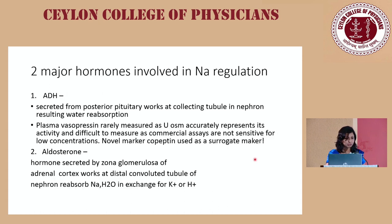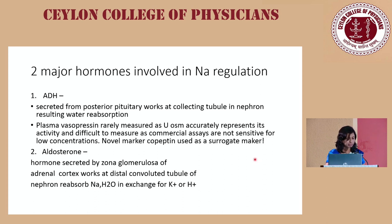Going back to physiology: two major hormones are involved in sodium regulation. Vasopressin, secreted from the posterior pituitary, acts at the collecting tubules of the nephron, resulting in water reabsorption. Vasopressin levels are difficult to measure clinically; urine osmolality accurately represents vasopressin activity. A novel marker called copeptin can be used as a surrogate. Aldosterone, secreted by the zona glomerulosa, acts at the distal convoluted tubule to reabsorb water and sodium in exchange for potassium and hydrogen.